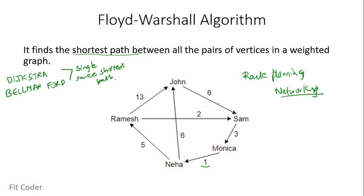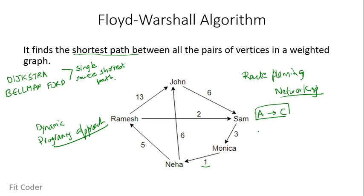Floyd-Warshall works on a dynamic programming approach. It breaks the problem down into smaller sub-problems, then combines the answers to solve the original problem. The core idea is: if we need to go from vertex A to vertex C, the minimum distance is either the direct distance A→C, or it goes via some other vertex B — where B can be any other vertex of the graph. The algorithm tries all possible intermediate vertices, tracking the minimum distance achieved, and in each cycle tries to reduce the distance further, until every pair has the shortest path.